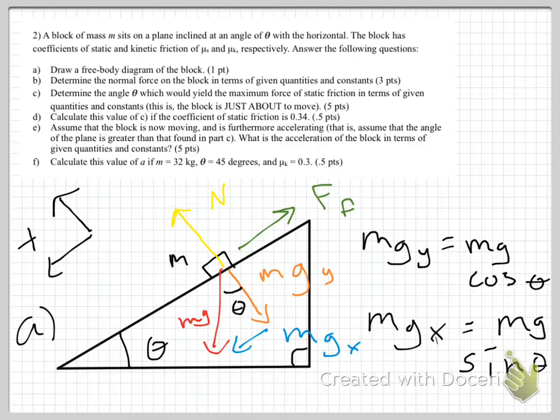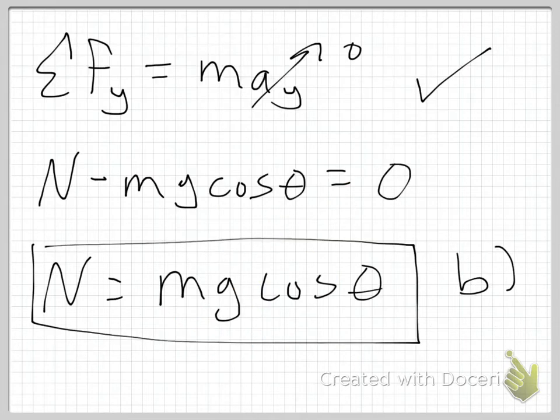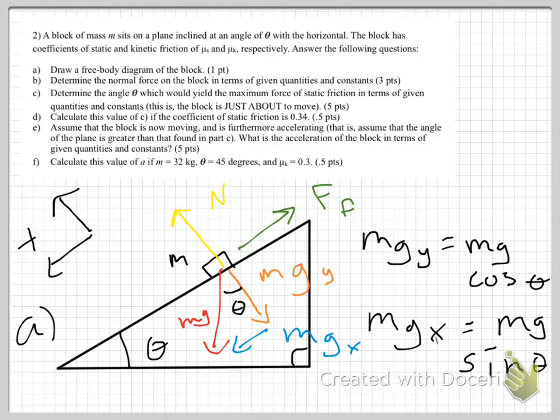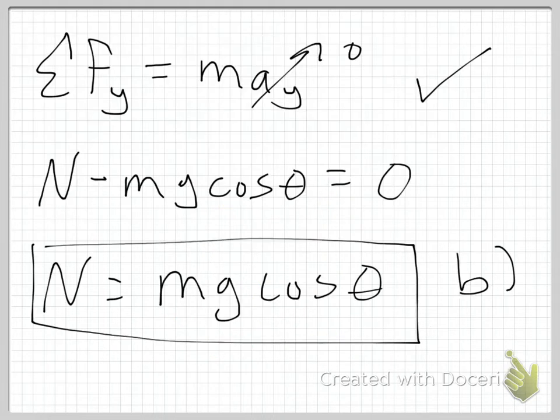Mass is 32 kilograms, theta is 45 degrees, and mu k, the coefficient of kinetic friction, is 0.3. So let me go over here and see if I can remember all that. Mass is 32 kilograms, theta is 45 degrees, and mu k is 0.3.